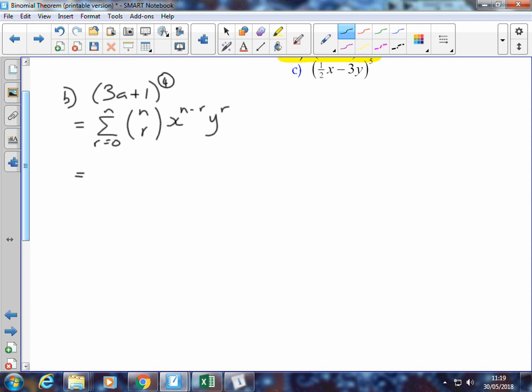We know that n in this case is 4, so we can rewrite it as the sum of all the terms from r equals 0 to 4 of 4 choose r. Now our first term, this term is not x, it's 3a. So we've got 3a to the power of 4 minus r. It's really important that the whole term goes in the bracket here. As soon as you've got more than one expression or one term, it has to go in the bracket, so it's not just a to the power of 4 minus r, it's 3a all to the power of 4 minus r. And the second term is 1, so we've got 1 to the power of r.